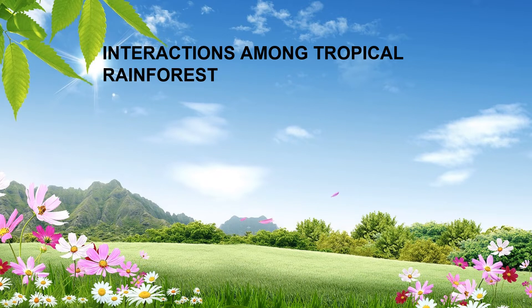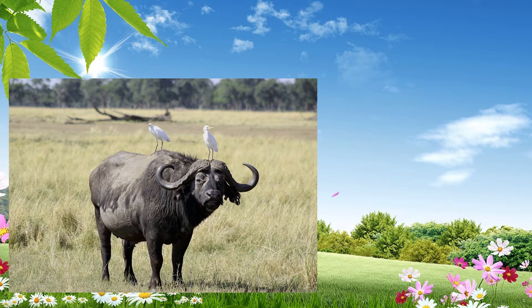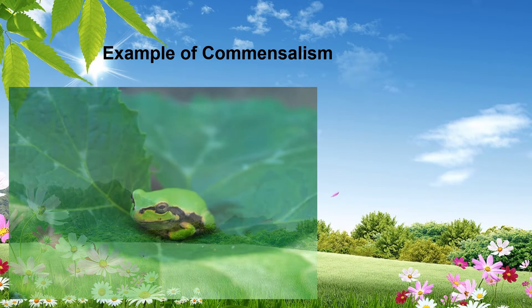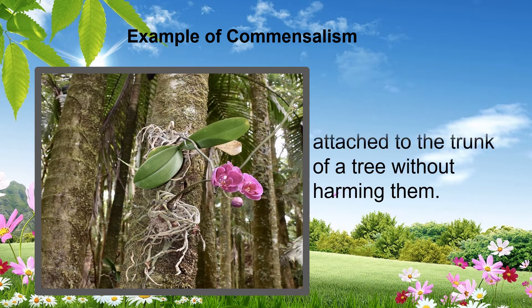There are different organisms living in this ecosystem which interact with each other. There are interactions that exist among the tropical rainforests. The first one is commensalism. Commensalism is an interaction where organisms live together without harming one another. For example, cattle egrets eat the insects stirred up by cattle when grazing. Tree frogs use plants for their protection. Orchids are attached to the trunk of a tree without harming them.